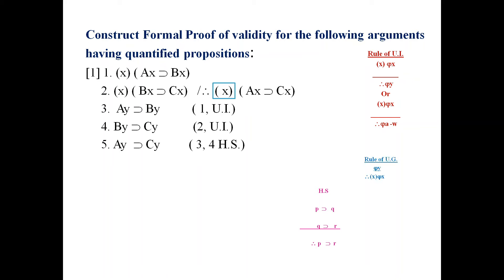In the sixth step, add the universal quantifier because the conclusion has a universal quantifier. Apply UG — which can only be applied when we have an arbitrarily selected individual Y, not a constant. That is why we used Y as the substitution instance, because later we needed to use UG. So apply UG to step 5 and get ∀x(Ax ⊃ Cx).